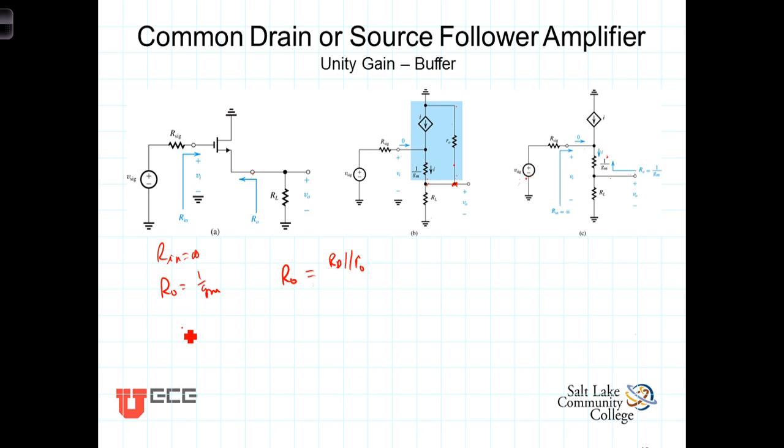We can calculate the closed circuit gain A sub V by looking here at the output. A sub V, of course, is equal to V out over V in with the load resistance present. And we can see here that we've got V in is dropped across these series combinations, so V out then is just the voltage divider.